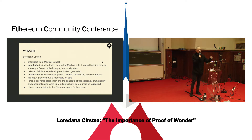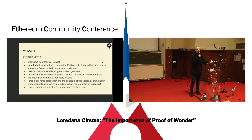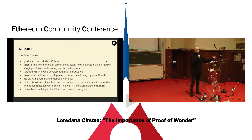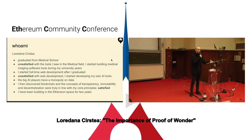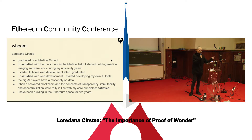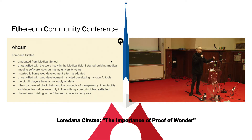At some point, I was unsatisfied with web development and looked for other things. I found machine learning and AI, tried it out, and built my own tools for making it easier to build models. But I didn't like that space much because of the monopoly on data — it wasn't as open as I would have wanted. But then I found blockchain and Ethereum, and I was really drawn by the concepts of transparency, immutability, and decentralization. They were very in line with what I wanted to do and be. I've been building in the Ethereum space for two years.